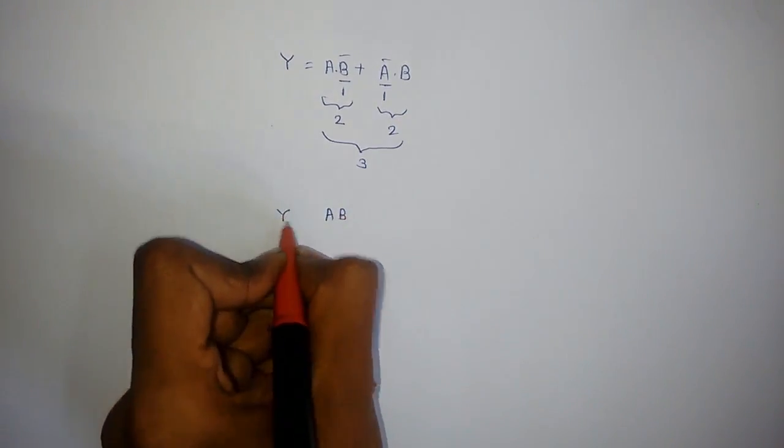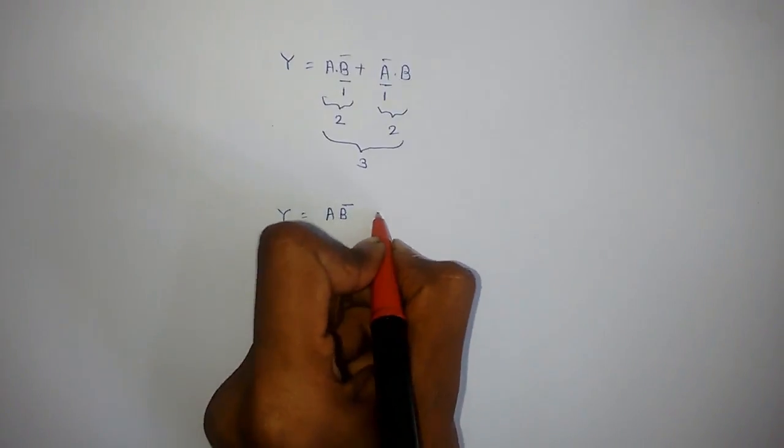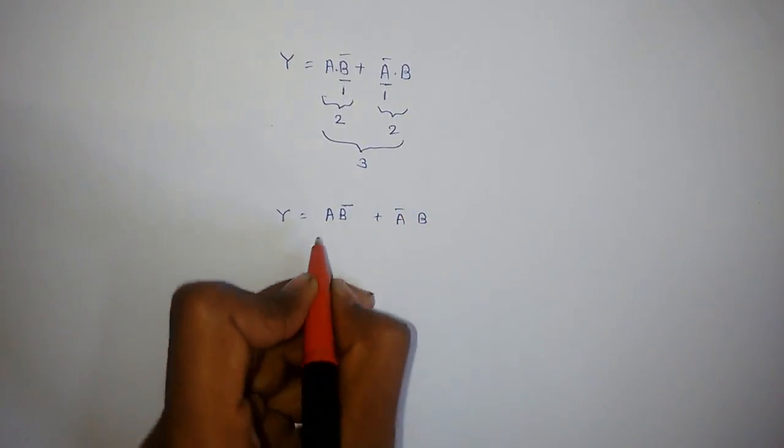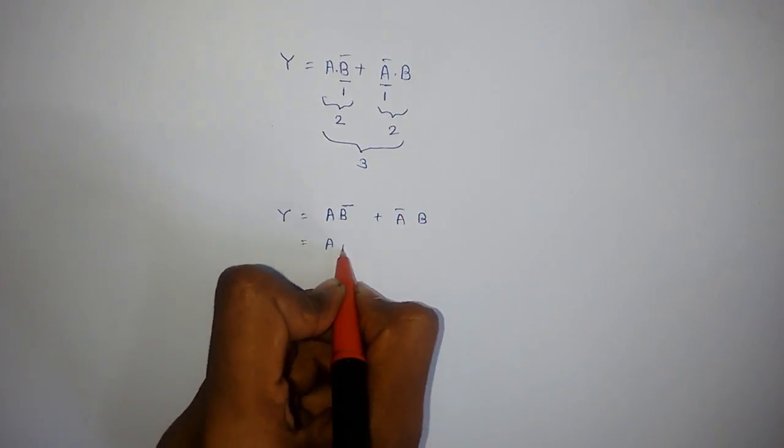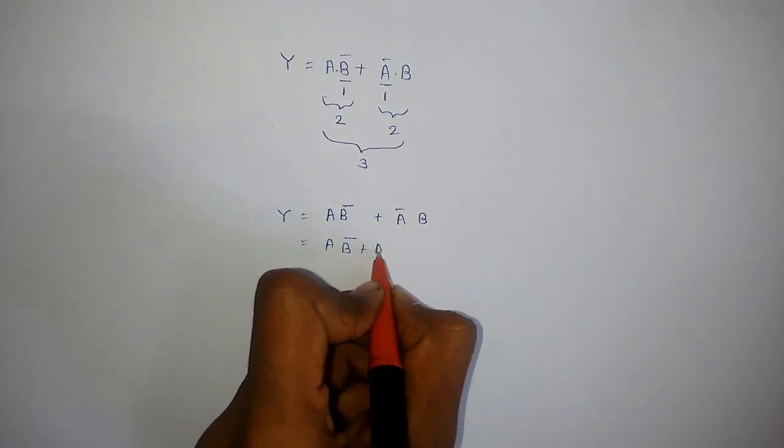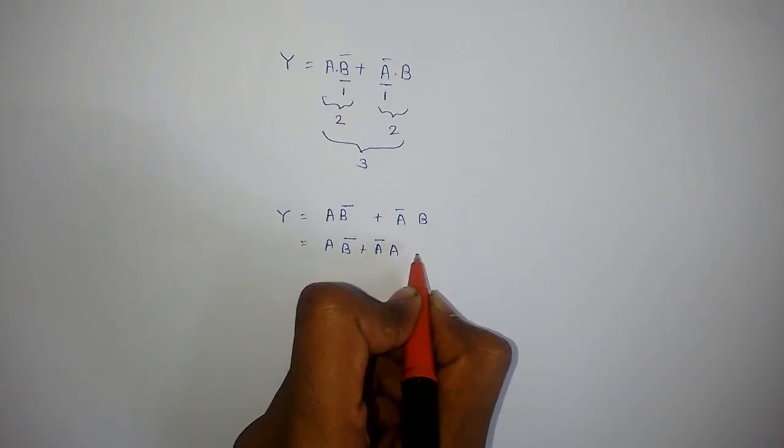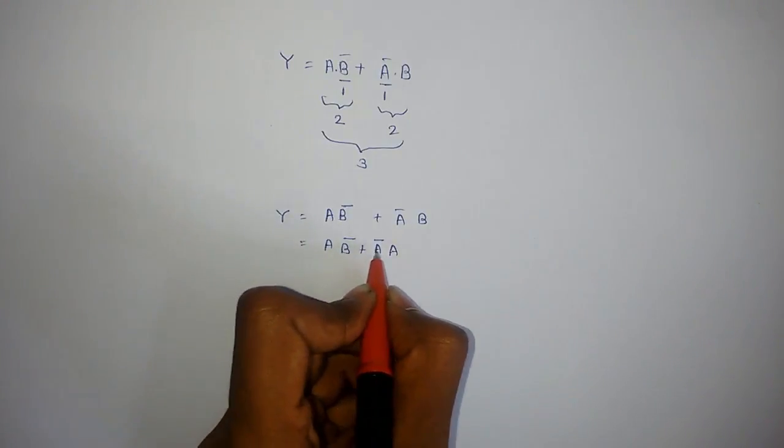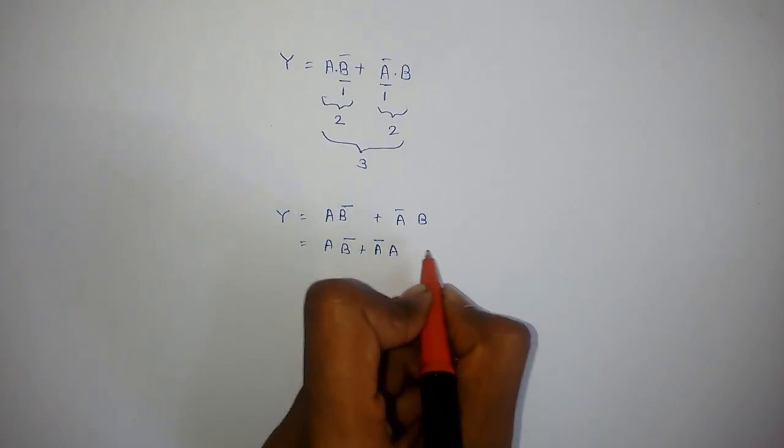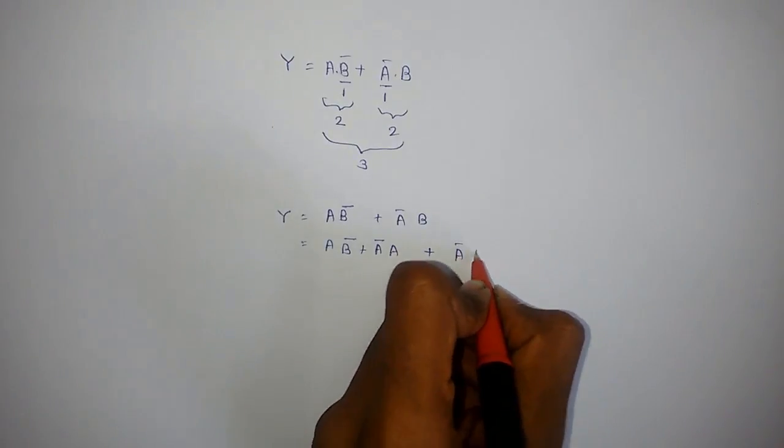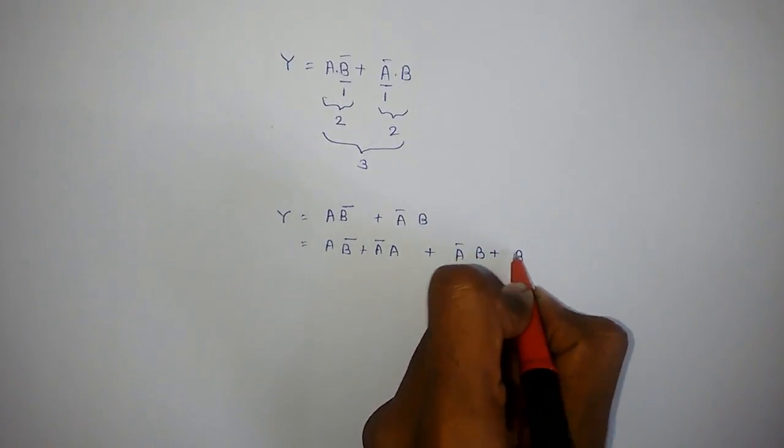Firstly we have Y equals A B-bar plus A-bar B. Now we will add A B-bar plus A-bar A. A-bar A is always equal to zero, hence A B-bar plus A-bar A equals A B-bar, and plus A-bar B plus B-bar B.